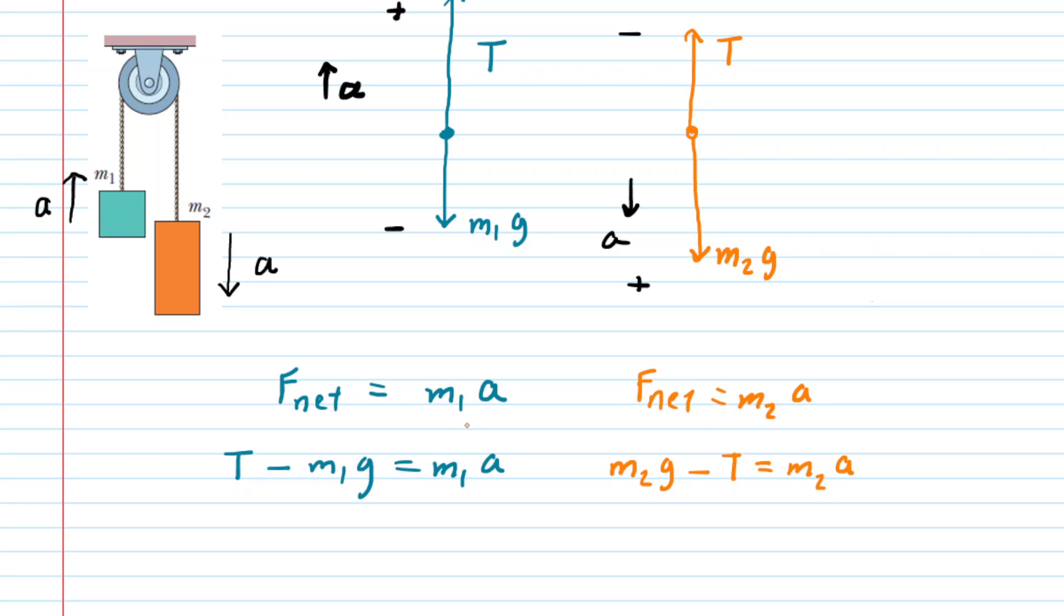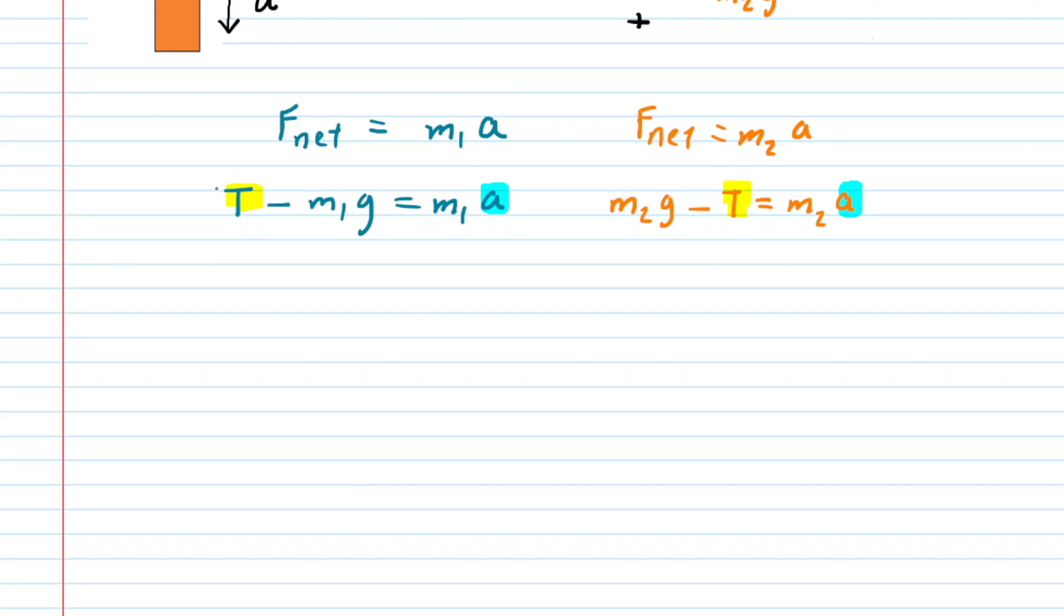Now, we have a system of two equations with two unknowns. Recall that we do not know the tension that is acting in that cord or in that rope, nor do we know the acceleration. Those are the two things we're trying to look for. And there's a neat algebraic trick that we can do in this situation. Let's go ahead and rewrite the two equations so that they're stacked on top of each other.